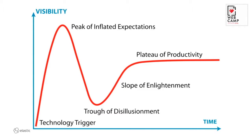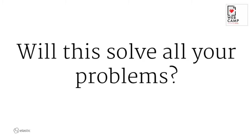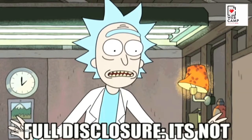Gartner once published the peak of inflated expectations, the trough of disillusionment, and the plateau of productivity. With microservices, I'm not sure where we are at the moment. Some people are probably at the productivity level already, others are just climbing up to the peak, others have fallen down to the trough. Microservices do help if you have too many people, too many dependencies, or need to scale up bits and pieces independently. Will they solve all your problems? Unfortunately not.